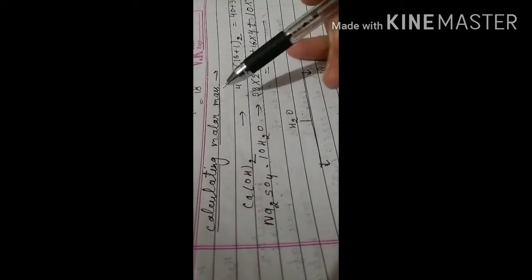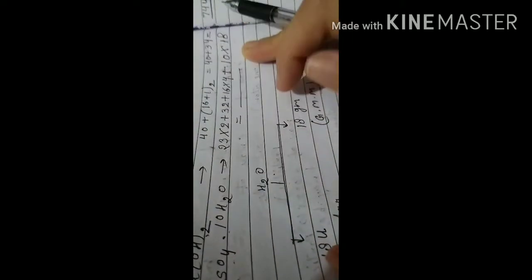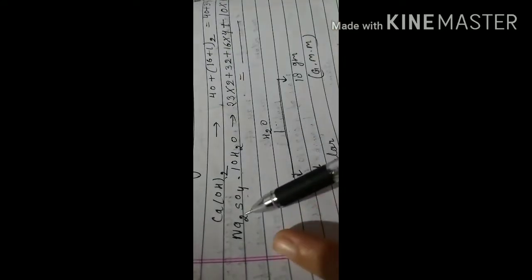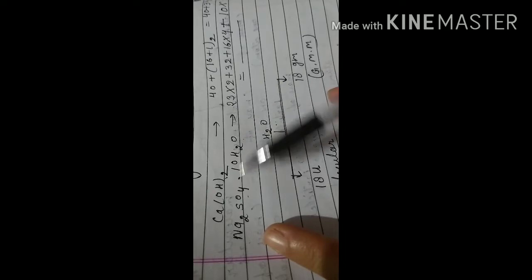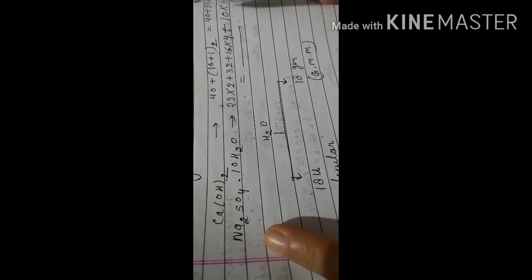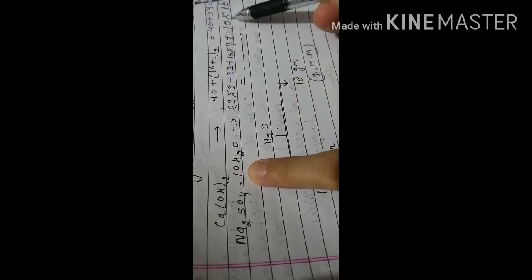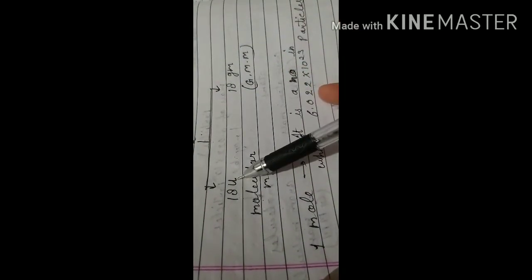To calculate molar mass, put in the atomic masses using the formula. For example, calcium hydroxide: add up the atomic masses of all elements to get 74. For sodium sulfate·10H₂O: sodium is 23 × 2, sulfur is 32, oxygen is 16 × 4, plus 10 × molar mass of water (18 = 16 + 2×1). For water, 18 u is molecular mass; written as 18 grams, it is called gram molecular mass.